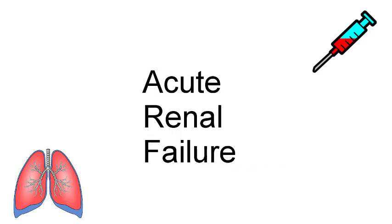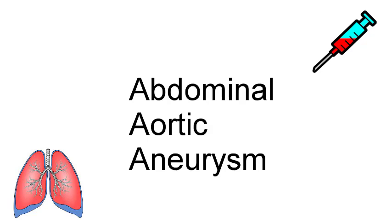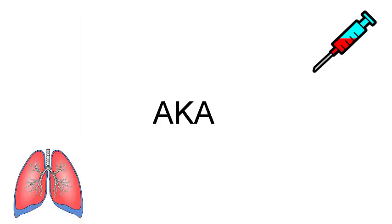ARF is acute renal failure. That means that your kidneys are going into failure because of something acute, or something going on right now, not long term. AAA is abdominal aortic aneurysm. This is a picture of your abdominal aorta. As you can see it's really big, and an aneurysm is a ballooning and a potential popping of that. So you could imagine the complications if that were to burst.